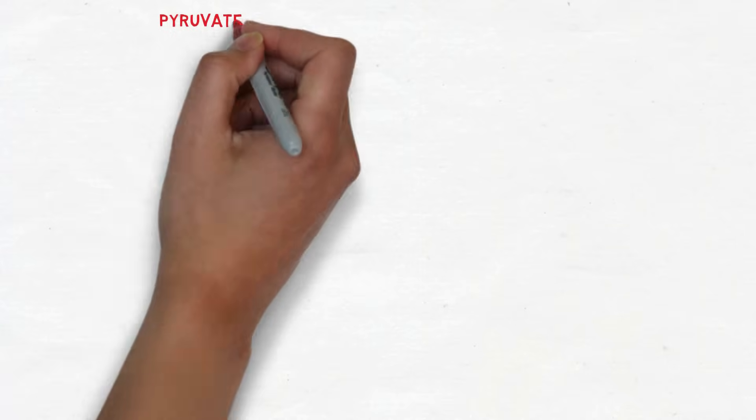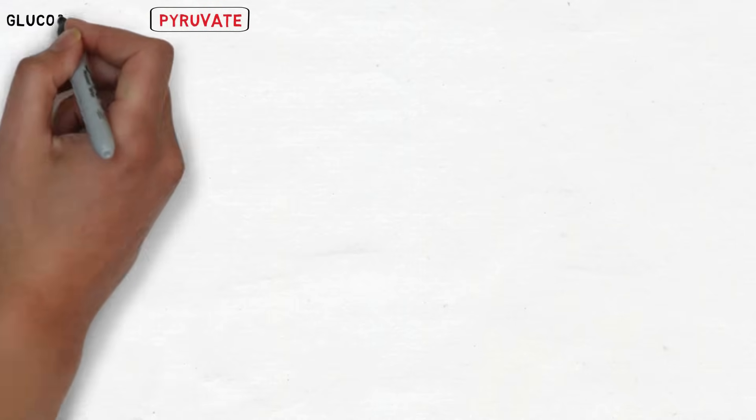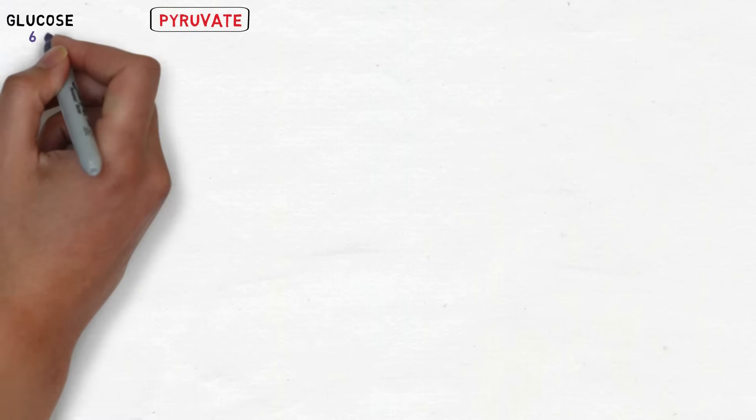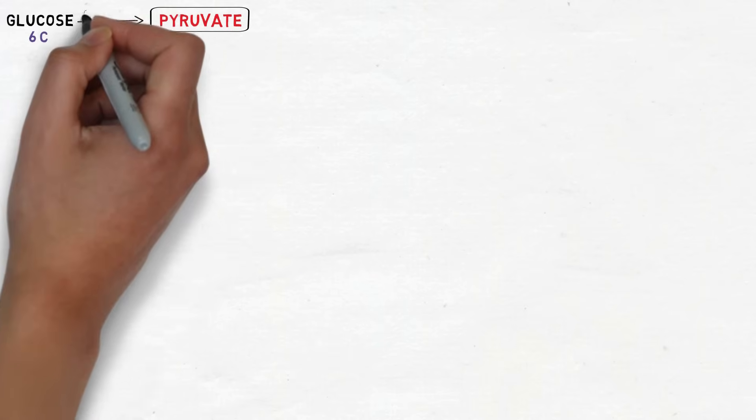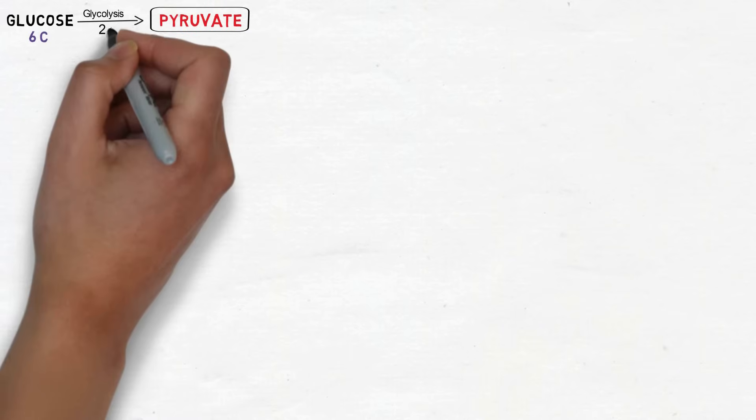The first step involved is actually a preparatory step which begins with pyruvate. Pyruvate is derived through the glycolysis of glucose which is a 6-carbon compound and it is split into two molecules of pyruvate which is a 3-carbon compound.